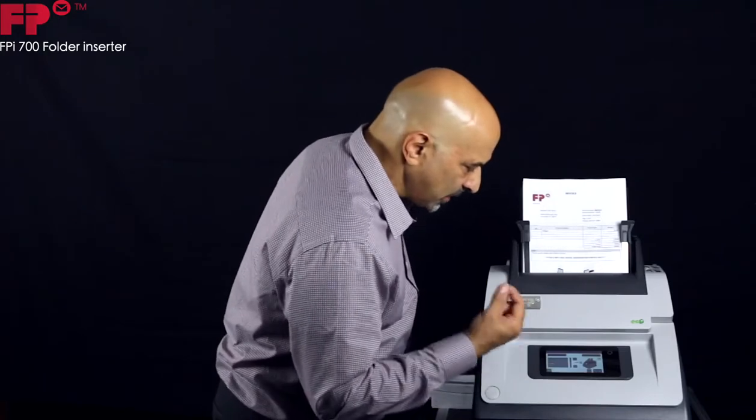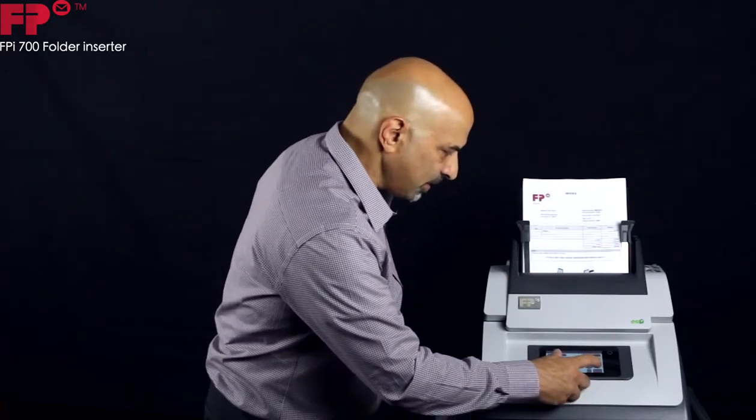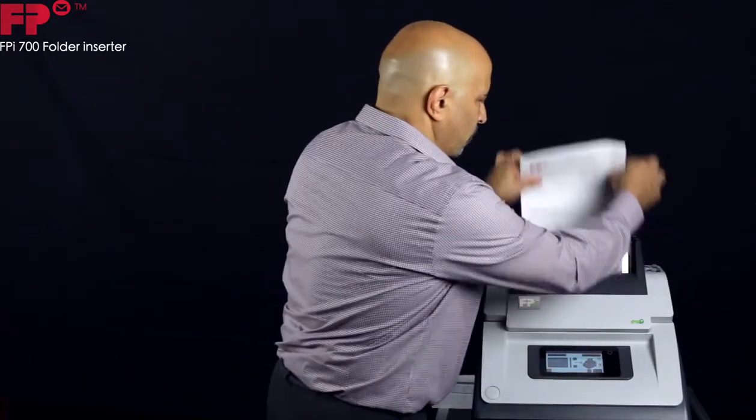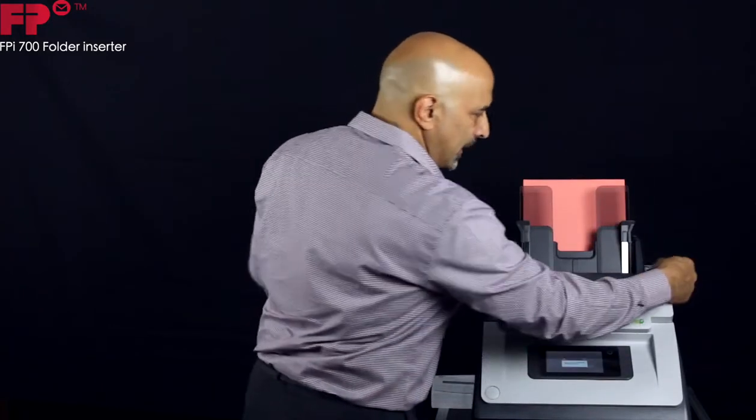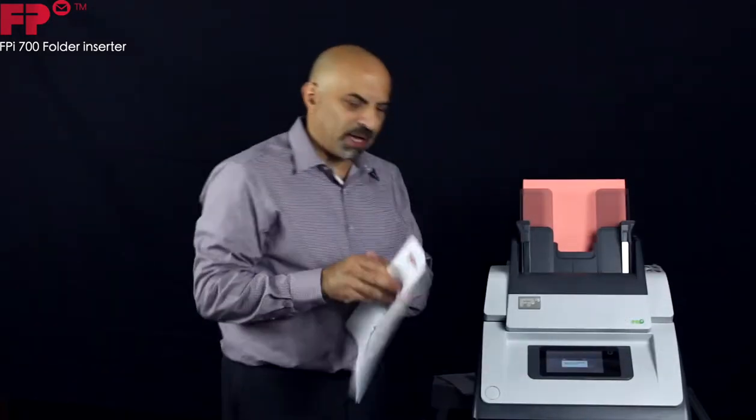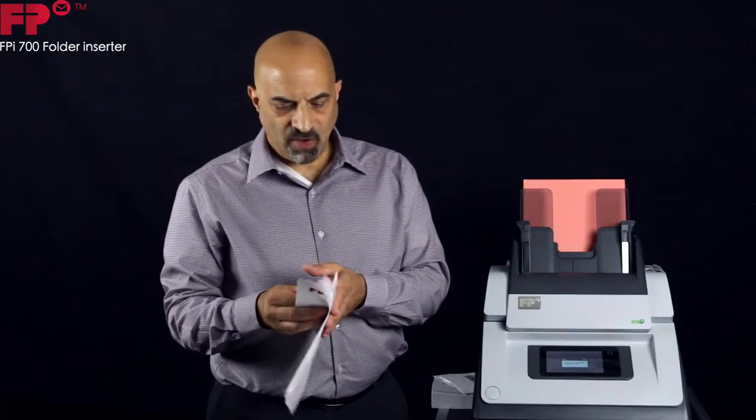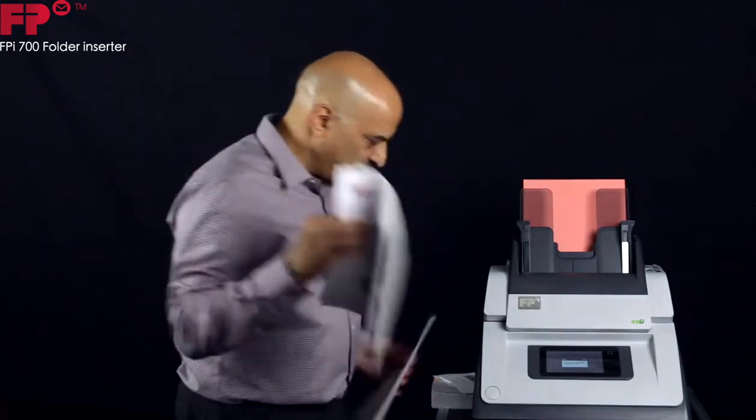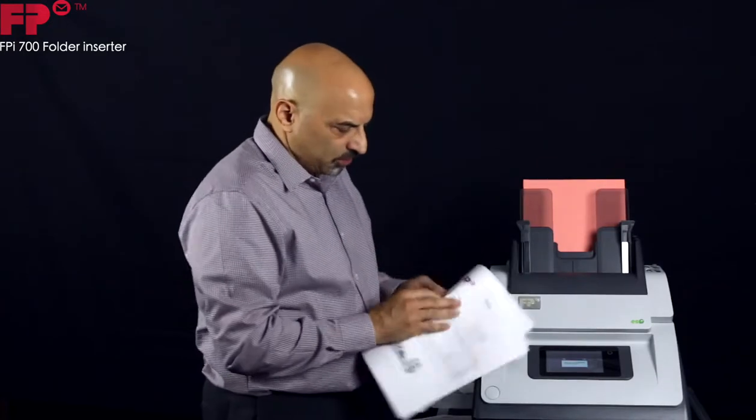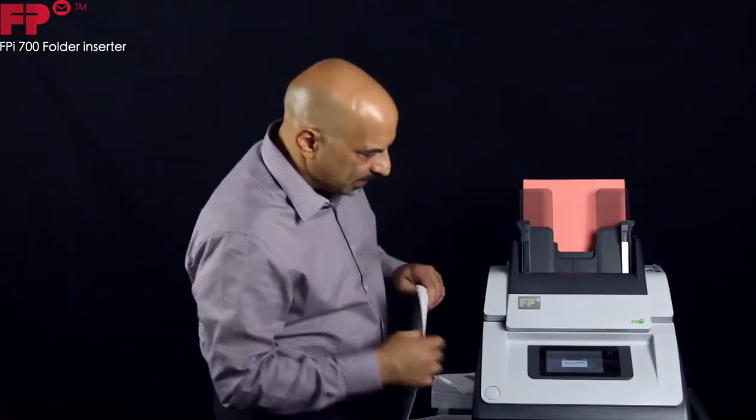If you want to do something special like those stapled sets that we were talking about, that works a little differently. What you do is a semi-automatic mode, or what we call daily mail, is you can take three, here's five pages, here's five sheets. So this is page one through five. It could be stapled, but it doesn't have to be.